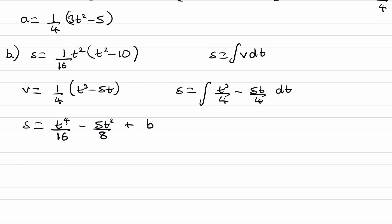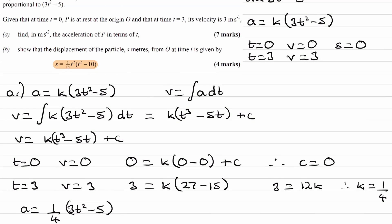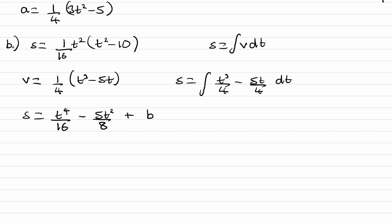Okay, so then, now we want to work out what our proportionality constant is. Remember that we were told that we started at the origin. When t is 0, the particle p is at the origin. So when t is 0, s is 0. We can use that. Put that into this. So if t is 0, when s is 0, well that will therefore mean, if we put that into this equation, that b is 0. So our equation is then t to the 4 over 16, 5t squared over 8.